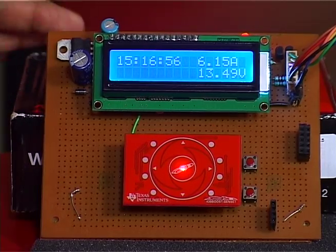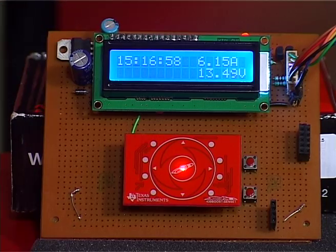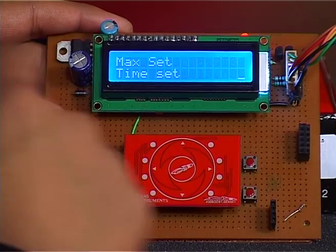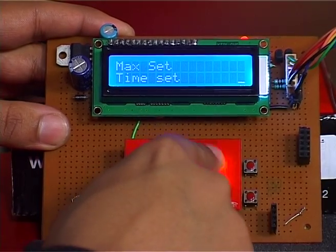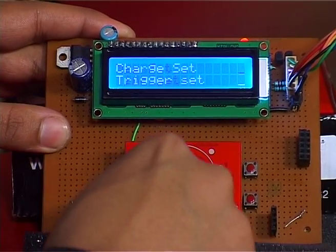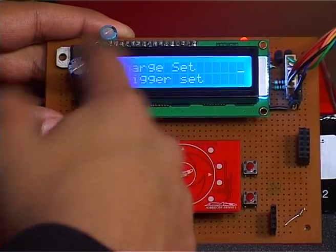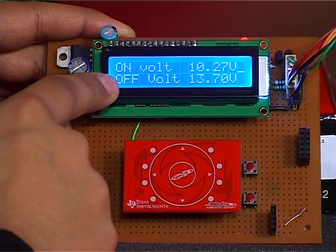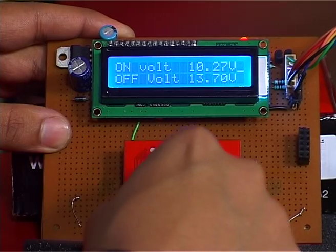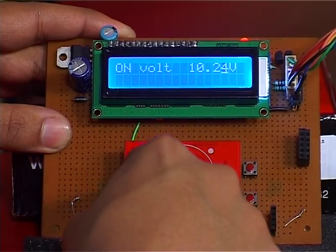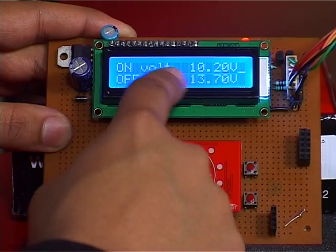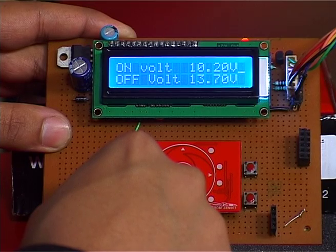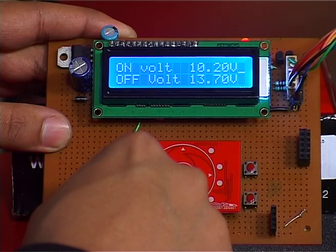In the user interface, we have the Capsense module, and as soon as the user wants to adjust any value, he can just bring his hand closer to the Capsense module. Here we have a menu of 4 different choices. Charge set. User can set the on voltage and off voltage for the batteries. That when to turn the charging on and when to turn it off. Like I have set this at 10.2 volts which is the very standard setting for lead acid batteries.